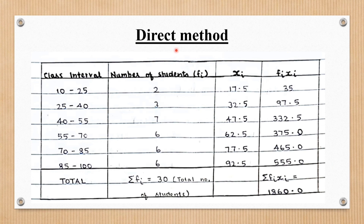The first method is the direct method. In the table, the class interval and frequency are given. First, we find the sum of frequencies, which is also represented by n. The next column is xi, which is the midpoint of the class interval — for example, the midpoint of 10 to 25 is 17.5. The easier way to find xi is using the class mark.